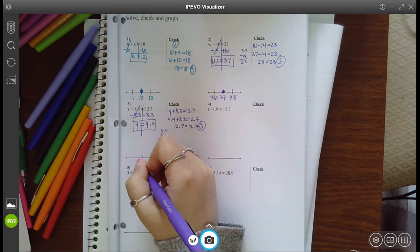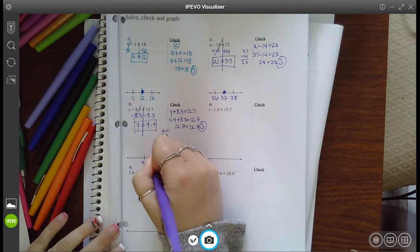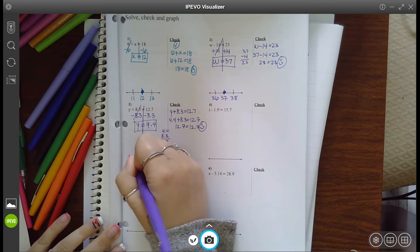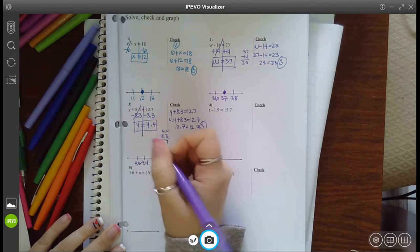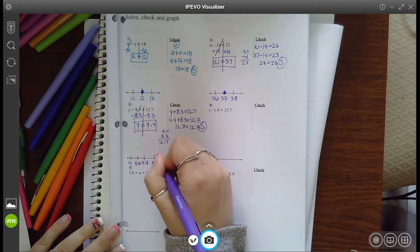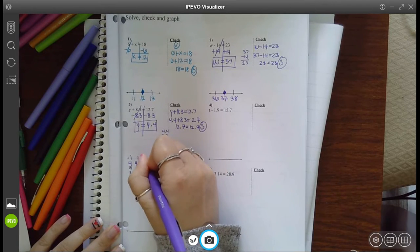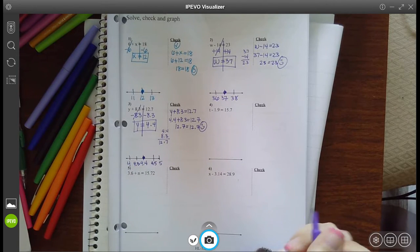Now you could put this as 4.5 is bigger and 4.3 is bigger, or you could say that it's between 4 and 5. Whichever one makes the most sense to you.